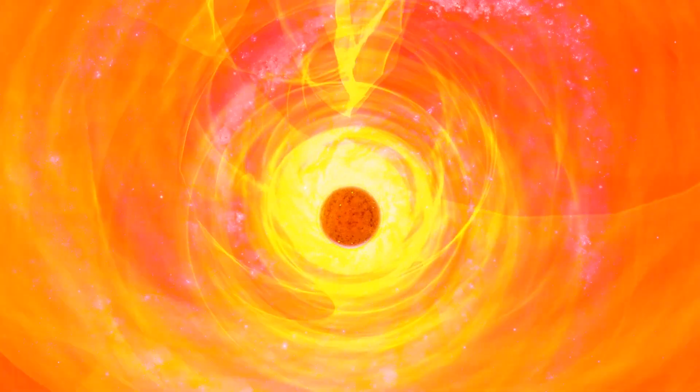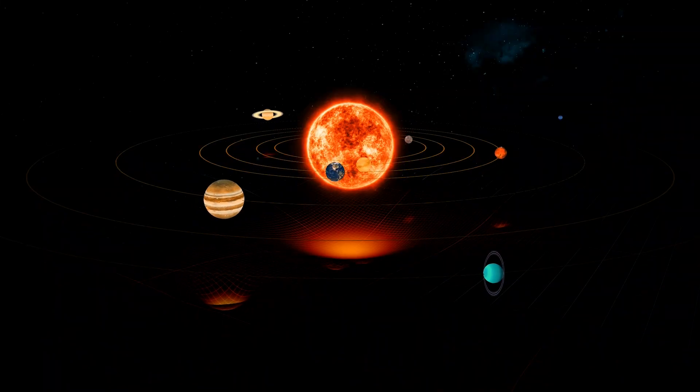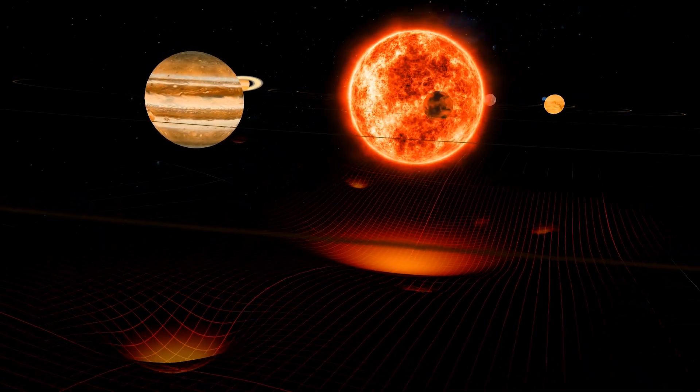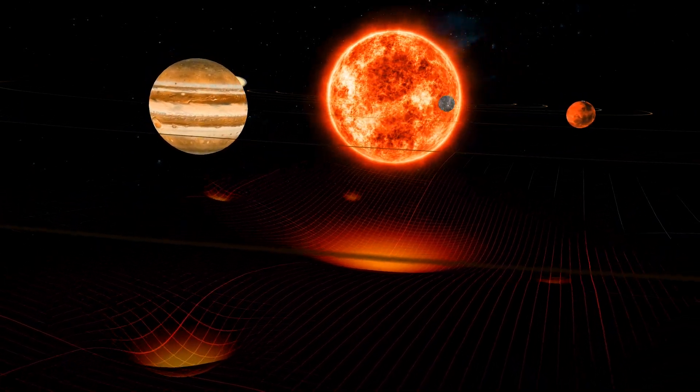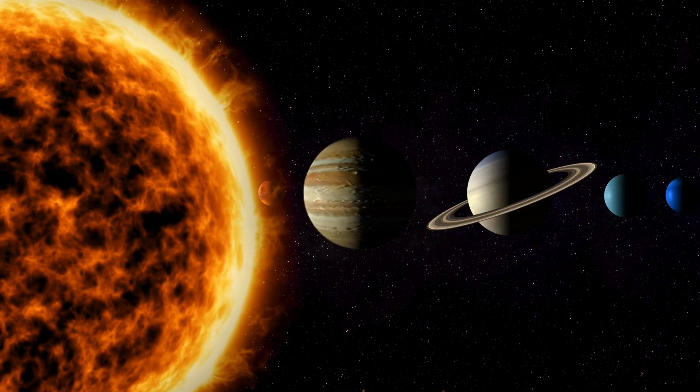To grasp the sheer size of Betelgeuse, consider this. If we were to position it at the center of our solar system, its massive outer surface would extend beyond the orbit of Jupiter, engulfing Mercury, Venus, Earth, Mars, and even the asteroid belt.